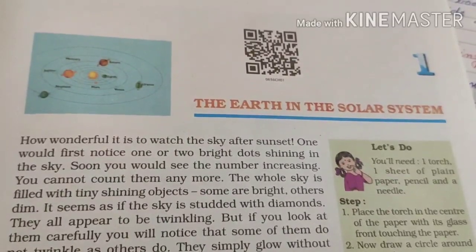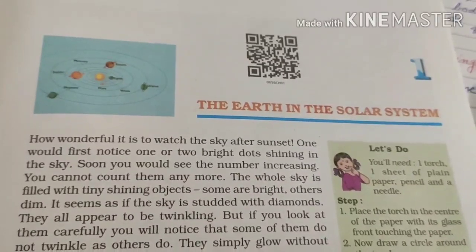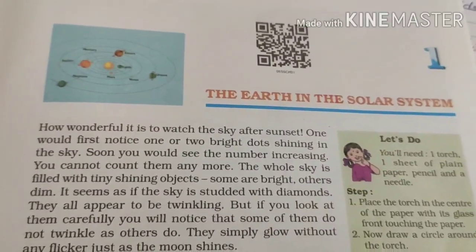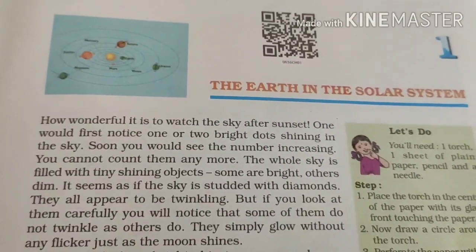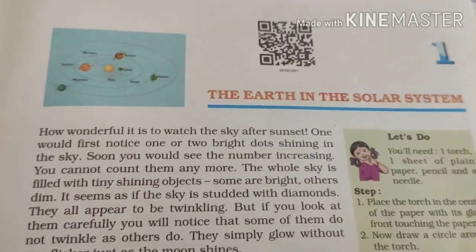The universe consists of millions of galaxies, and our galaxy — Akash Ganga, the Milky Way — is just one of them. The galaxy is named so because it looks like a white band in the sky, as you can see on the screen, with lots of surrounding dust. You can also see the pole star among the many stars visible in the sky.